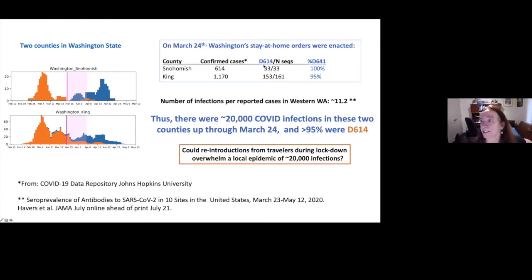This is how many sequences they had on the March 24th date of the governor's stay home orders. And almost all of the sequences at that date that had been collected prior to that date were of the original Wuhan form. This is the number of confirmed cases in that county. Recently there was a lovely study where people tried to use antibody diagnostics to go back and say how many true cases were there versus reported cases in different locations in the U.S. In western Washington, that number is about 11.2. So in these two counties, there are probably about 20,000 COVID infections through March 24th, and not greater than 95% of these were D614.